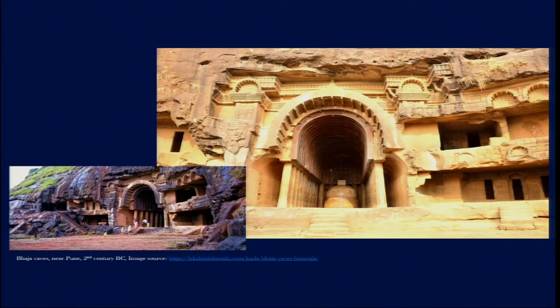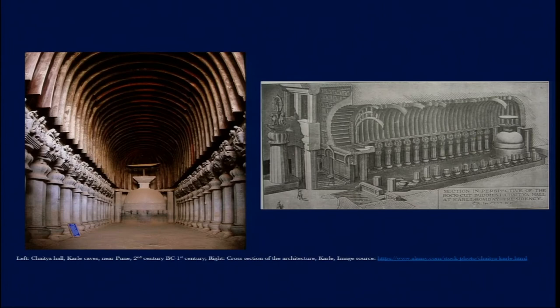Apart from ornamentation, these stone 'wooden supports' do not give any structural integrity or strength. Another example is the Karla Caves. In both cases we find Chaitya halls where people gathered for worshipping, meditation, and possibly education. There are simple cells situated beside those Chaitya halls used by monks and nuns for staying, while all would gather in the large Chaitya halls which are large in their proportion.